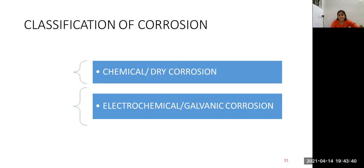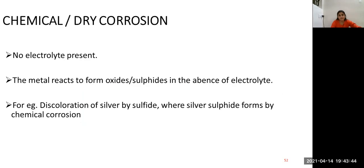Classification of corrosion is chemical or dry corrosion, and electrochemical or galvanic corrosion. Under chemical or dry corrosion, no electrolyte is present. The material reacts to form oxides or sulfides in the absence of electrolytes. For example, discoloration of silver by sulfide where silver sulfide forms by chemical corrosion.